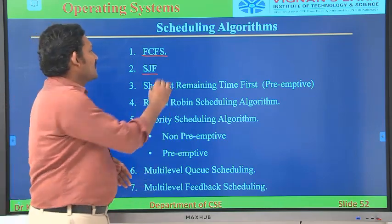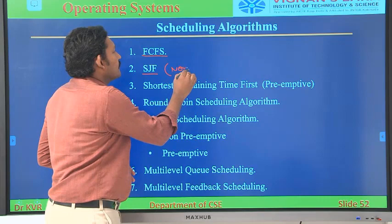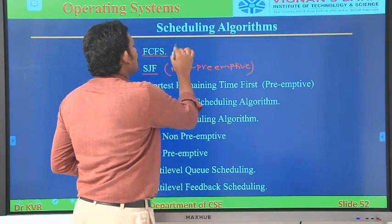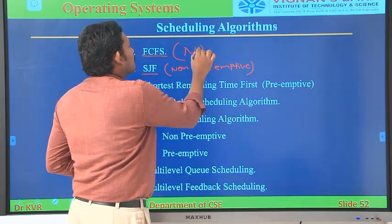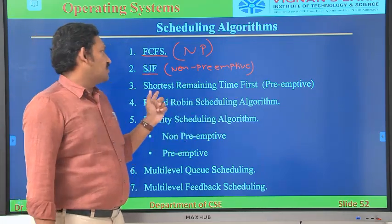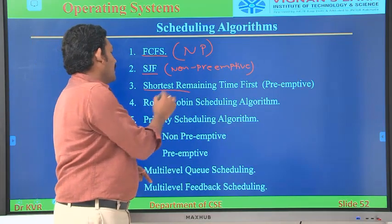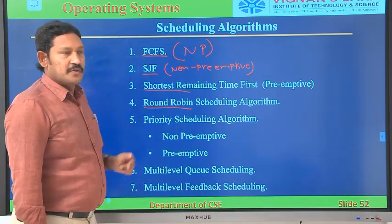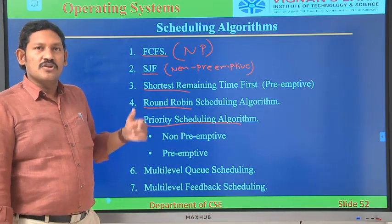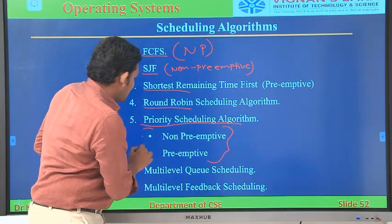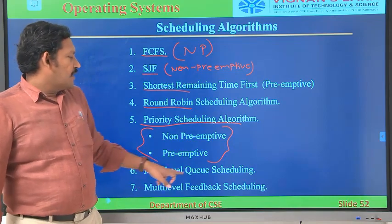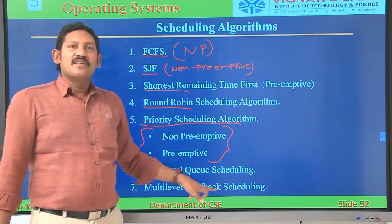Shortest Job First is non-preemptive. FCFS is also non-preemptive. Within SJF, we have another concept that is preemptive — Shortest Remaining Time First. It is preemptive. Next one is Round-Robin scheduling algorithm — it is also preemptive. Next we have Priority Scheduling algorithms, which has both preemptive and non-preemptive variants. These two we have already discussed, including example problems.